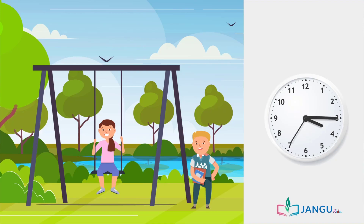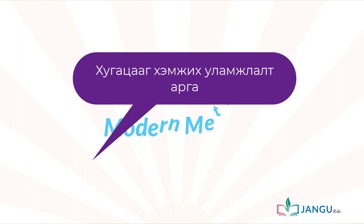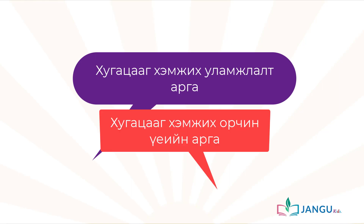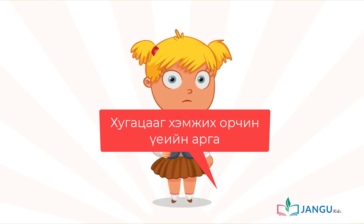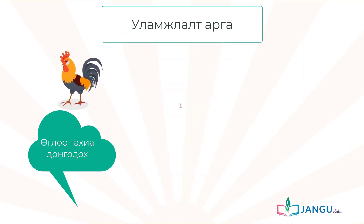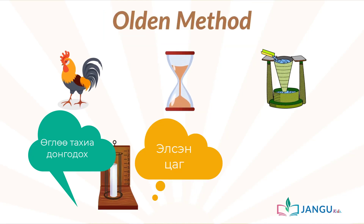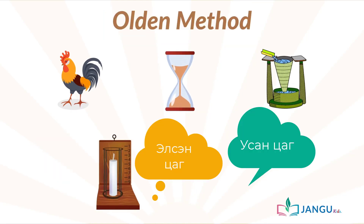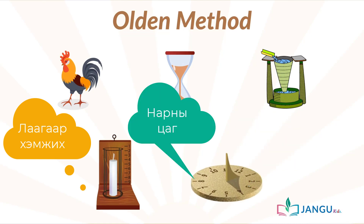There are two methods of measuring time: the olden method and the modern method. Do you know how old methods of checking time are? In the olden days, people used different things to know what time it was. They used the sounds of certain animals, hour glasses, water clocks, candle clocks, and sometimes shadow clocks. But those were in the olden days.